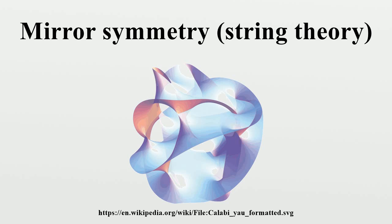String theory is a theoretical framework in which the point-like particles of particle physics are replaced by one-dimensional objects called strings. These strings look like small segments or loops of ordinary string. String theory describes how strings propagate through space and interact with each other. On distant scales larger than the string scale, a string will look just like an ordinary particle, with its mass, charge, and other properties determined by the vibrational state of the string. Splitting and recombination of strings correspond to particle emission and absorption, giving rise to the interactions between particles.